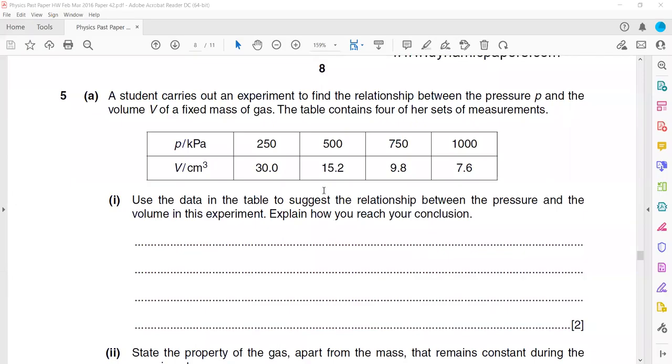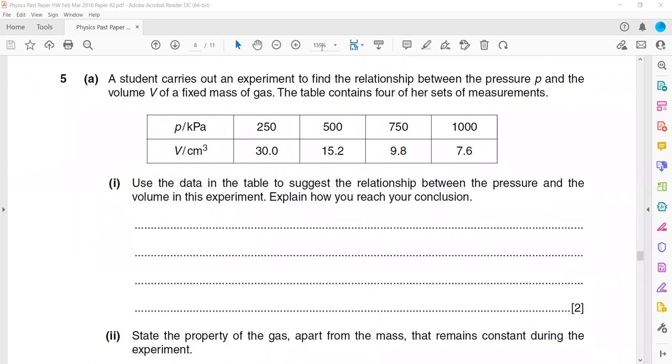A student carries out an experiment to find the relationship between the pressure and the volume of a fixed mass of gas. The table contains four of her data sets. Use the data to suggest a relation between the pressure and volume in the experiment.